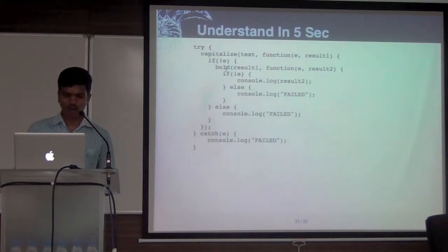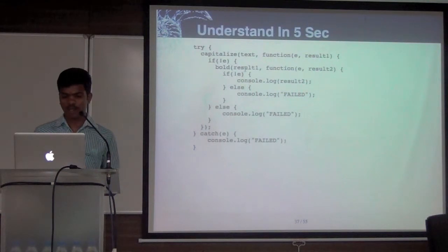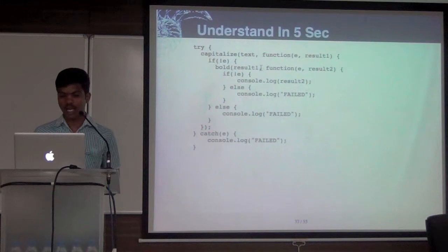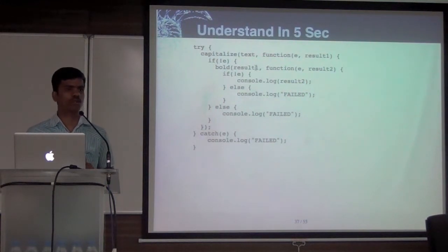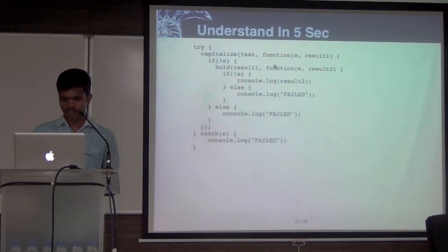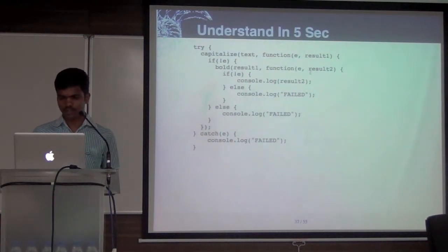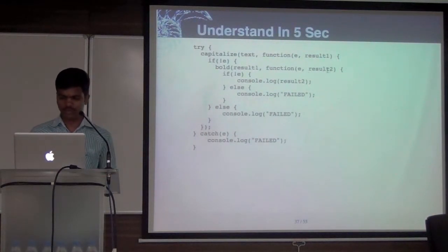Now I have the capitalized version. With that, what I'm going to do is bold it — so I'm again calling this bold function, passing the capitalized version. It's not synchronous because it's not going to return the bold version immediately. So I have to create another callback, and this function will get executed when bold is done. I'll have the final version in result2.